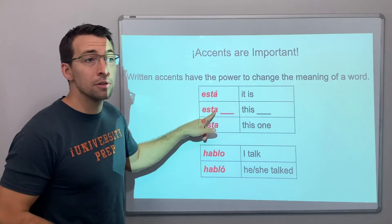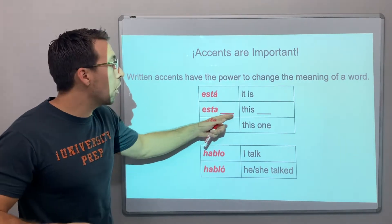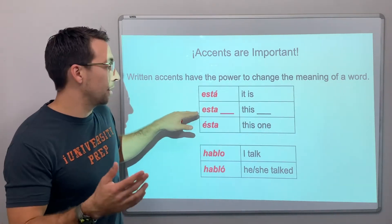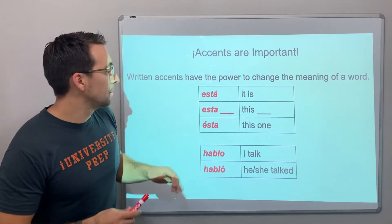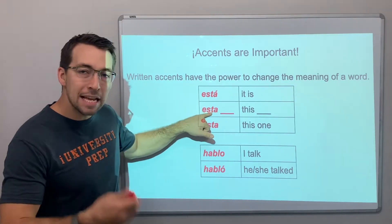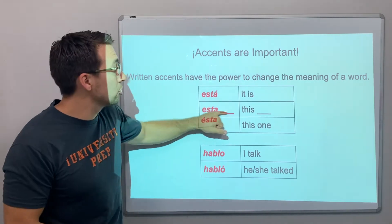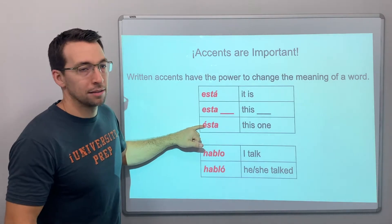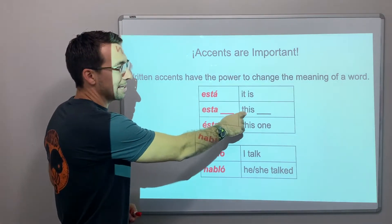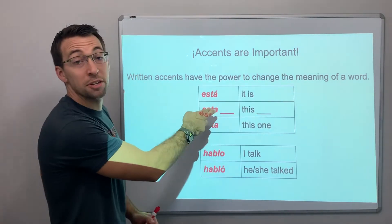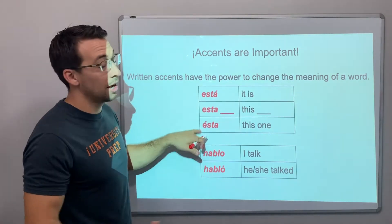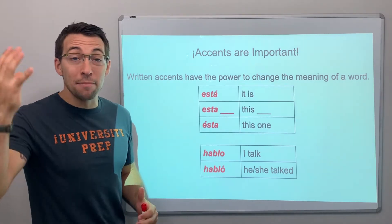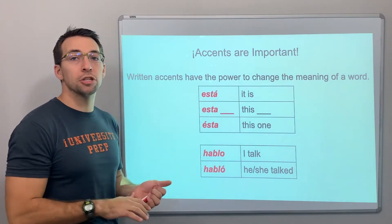Esta falda es bonita — this skirt is pretty. Esta, without an accent, means 'this' — it's a demonstrative adjective. Ésta es bonita — this one is pretty — that's a demonstrative pronoun. And está is a conjugated verb. Written accents affect the meaning of a word, so just understand that.